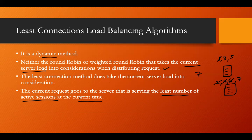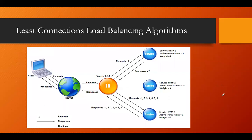The server with the least number of active sessions or active requests is chosen for the next request, so that the load is balanced. If we had used round robin, request seven would go to server one — but that would overload server one and underload server two. That is not the objective of a load balancer. The objective is to balance the load evenly among all servers.